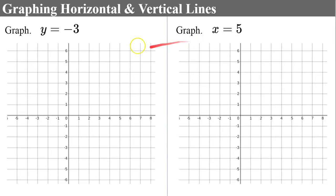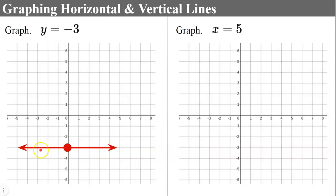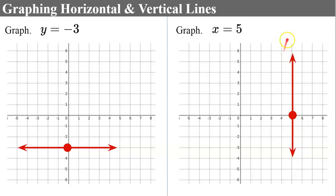Let's practice graphing horizontal and vertical lines. For y equals negative 3, we plot a point on the y-axis at negative 3, then draw a horizontal line through that point. This line has a y-intercept of negative 3. To graph x equals 5, we go to the x-axis and plot a point at 5, then draw a vertical line through it, giving an x-intercept of 5.